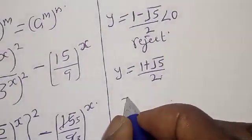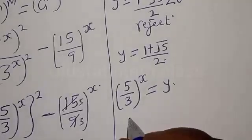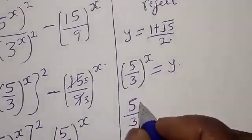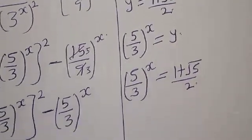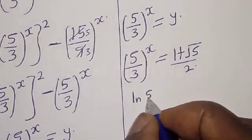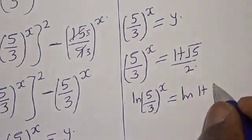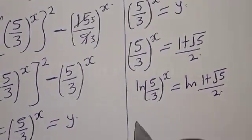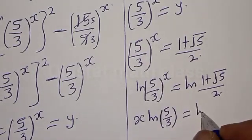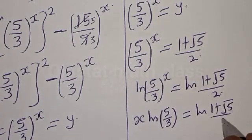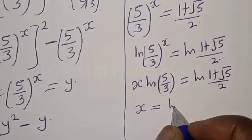The real solution is y is equal to (1 plus square root of 5) divided by 2. Remember that we said y equals (5/3) raised to power s. So (5/3) raised to power s equals (1 plus square root of 5) divided by 2. Now let's take the natural log of both sides: natural log of (5/3) raised to power s is equal to natural log of (1 plus square root of 5) divided by 2. This gives s times natural log of (5/3) equals natural log of (1 plus square root of 5) divided by 2.